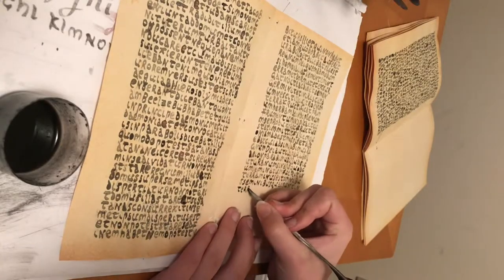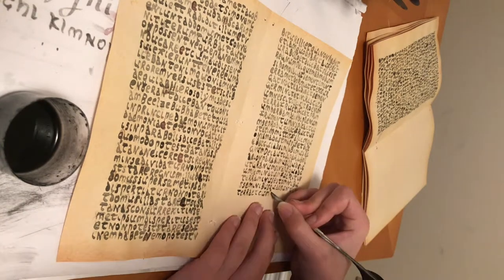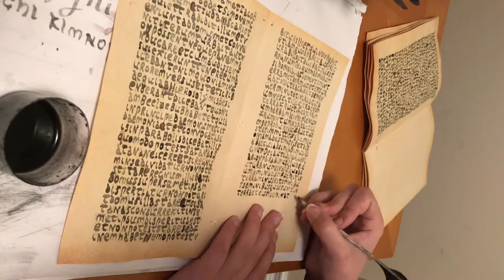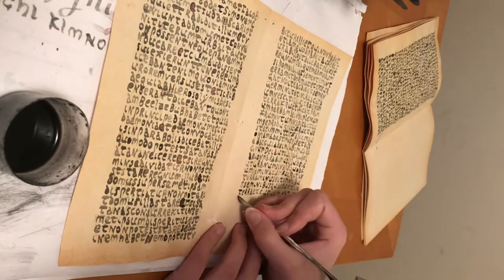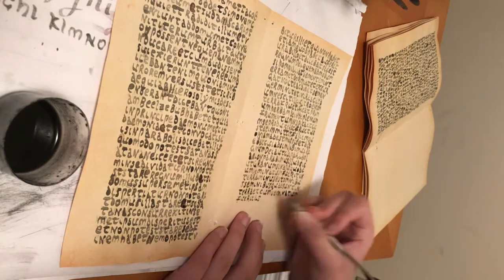Christians played a very important role in the adoption of the Codex, because the majority of Christian texts were written on codices, as opposed to other formats such as the papyrus roll. As Christianity spread throughout the Roman Empire, so did the use of the Codex.